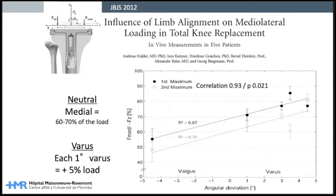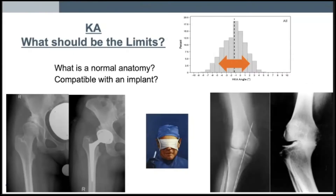Total knee implants and their fixation methods may not be as tolerant as cartilage and bone to overload. That is why we should question ourselves: should all patient's anatomy be reproduced? From total hip replacement experience, we know that a severe hip dysplasia anatomy is not compatible with our implants and should be adapted. Is it the same for total knee arthroplasty? Should we reproduce blindly all anatomies? I believe we should not, because some pathoanatomies exist and should be modified to be compatible with our current implants.